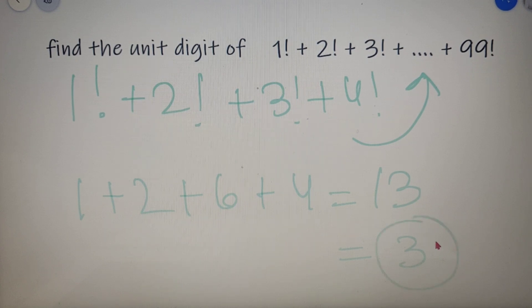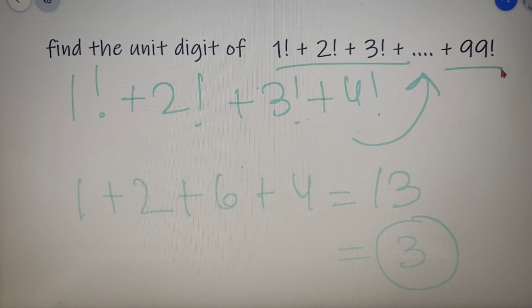So the final answer of our question is 3. So the unit digit of 1 factorial plus 2 factorial all the way up to 99 factorial is 3.